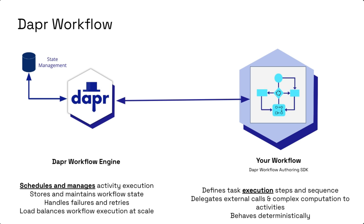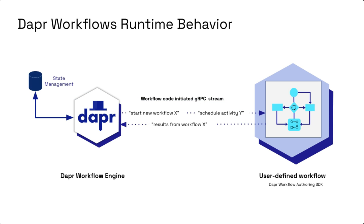How does the Dapr workflow in your application code interact with the Dapr sidecar? The Dapr sidecar is responsible for scheduling and managing workflow activity execution — it's the execution engine. The workflow itself is written in your application code using the Dapr workflow authoring SDK. The Dapr engine stores an event stream of all activity execution results, which can be replayed as needed to ensure stateful reliability. On startup, the workflow application uses the SDK to send a gRPC request to the sidecar and gets back a stream of workflow work items, returning results to the Dapr engine which stores them in state.